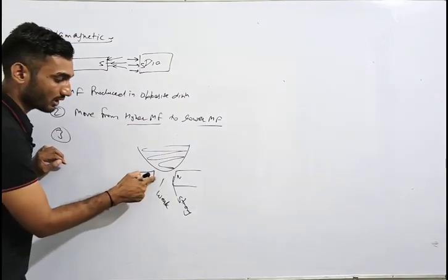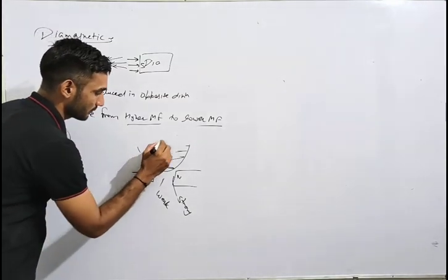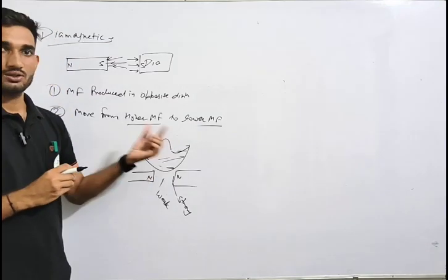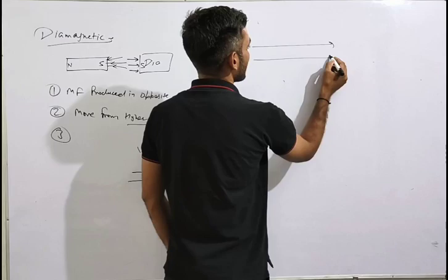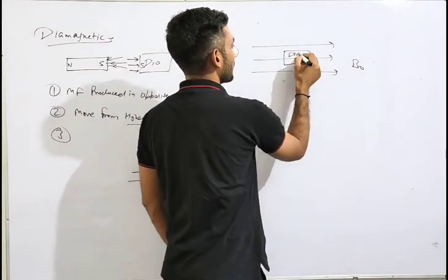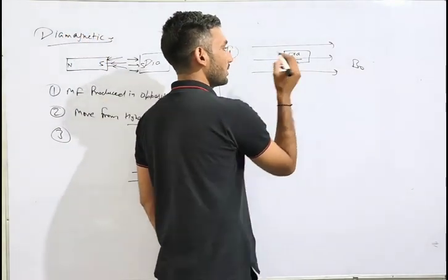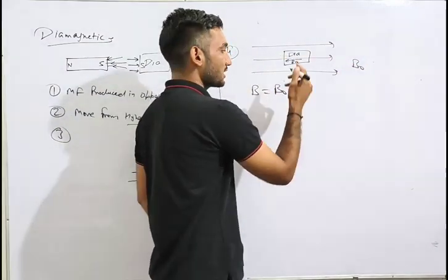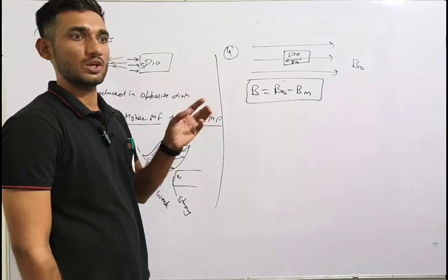Near the north pole, the magnetic field is strong, and away from it the field is weak — so the diamagnetic material moves away from the stronger region toward the weaker region. We applied a magnetic field B₀; the diamagnetic material produces a field in the opposite direction. So the net magnetic field B is B₀ minus the produced field, meaning the net magnetic field decreases inside the diamagnetic material.